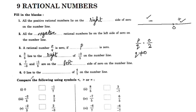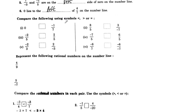0 lies to the right of negative 4 by 7 on the number line. Negative 4 by 7 is a negative rational number on the left side. 0 is greater than any negative number, such as negative 1 by 7, so 0 is greater than negative 1 by 7.